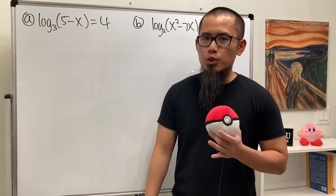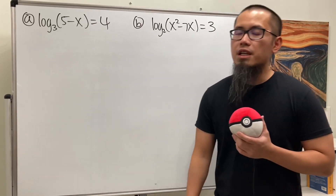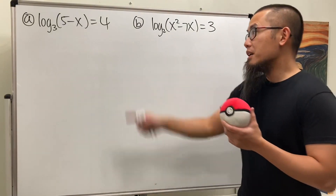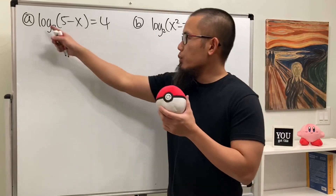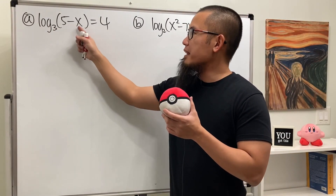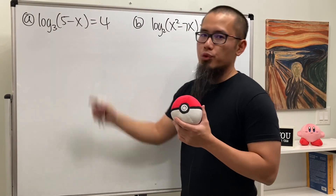So how do we solve logarithmic equations? In this video, we'll do four examples. Here's the first one: we have log base 3 of (5 minus x), and that's equal to 4.